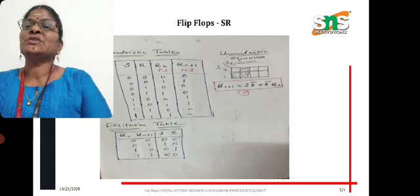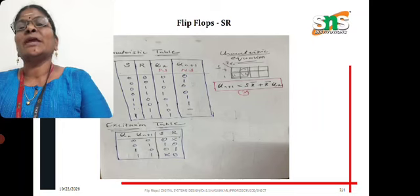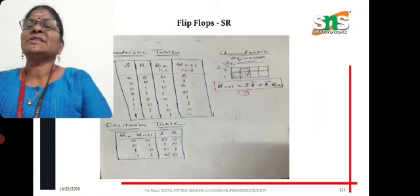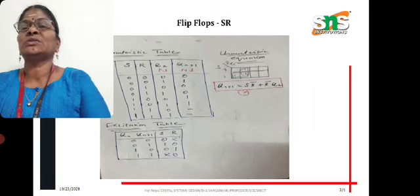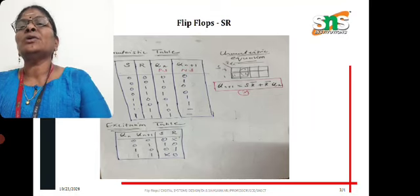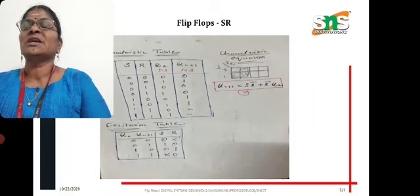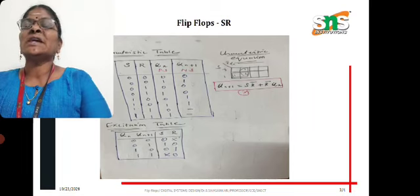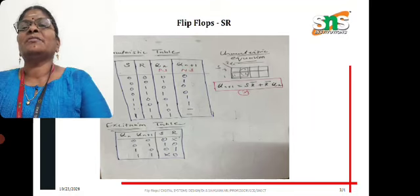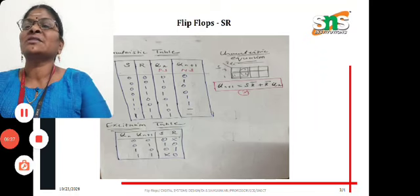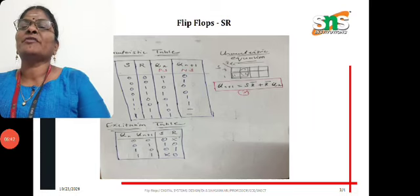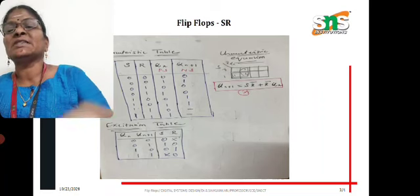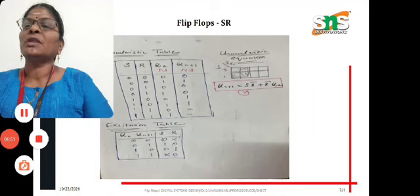From the basic truth table we frame the characteristic table. S and R are the inputs, Q(N) is the present state, and Q(N+1) is the next state. When S=R=0, there is no change, so Q(N+1) equals Q(N) for both rows. Using the basic truth table, we complete the characteristic table, plot the K-map, and derive the characteristic equation. Finally, from the outputs we frame the excitation table, where the present state and next state are the inputs and S, R are the outputs. This is all about the SR flip-flop.